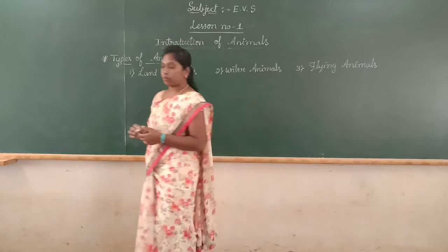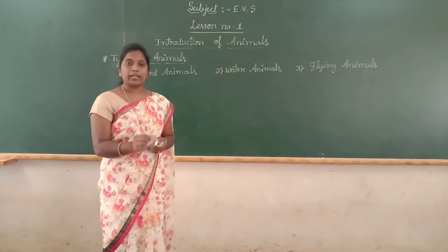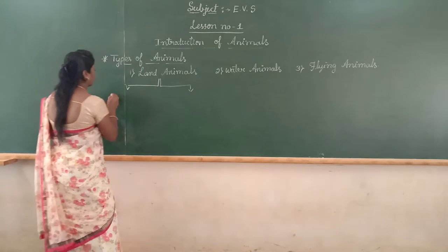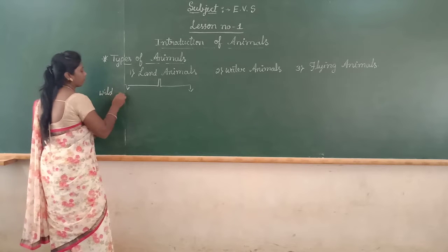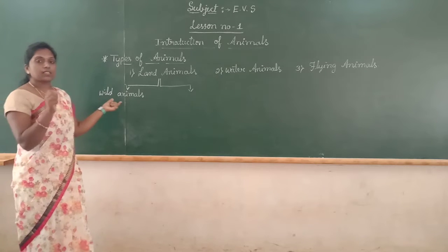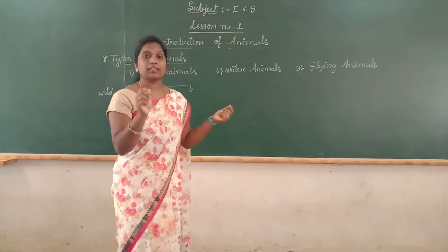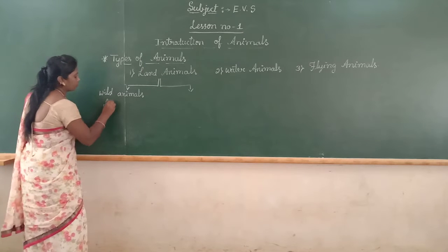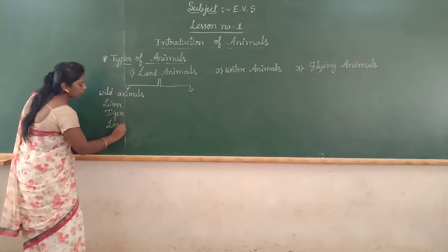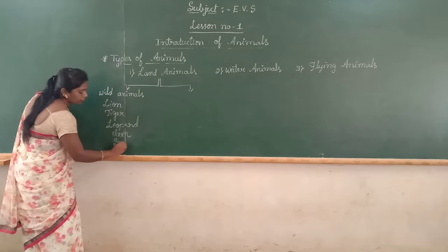First, we go to land animals. Further, we divide land animals into two groups: wild animals and domestic animals. First, we go to wild animals. Some animals live in the forest — they are wild animals. For example: lion, tiger, leopard, deer, snake, etc.